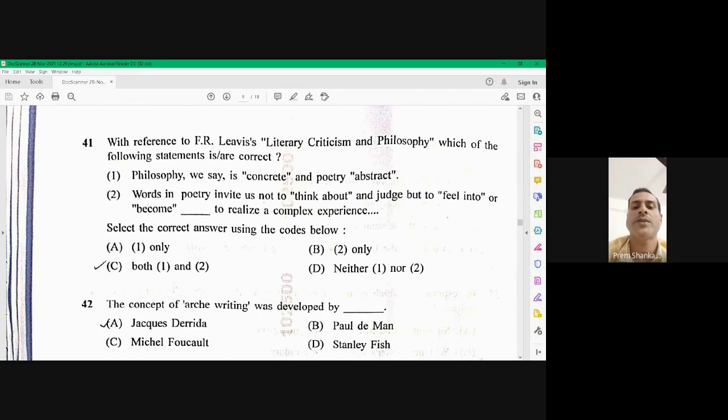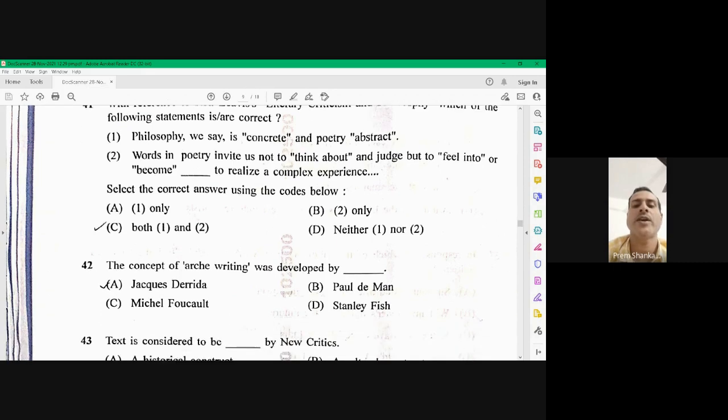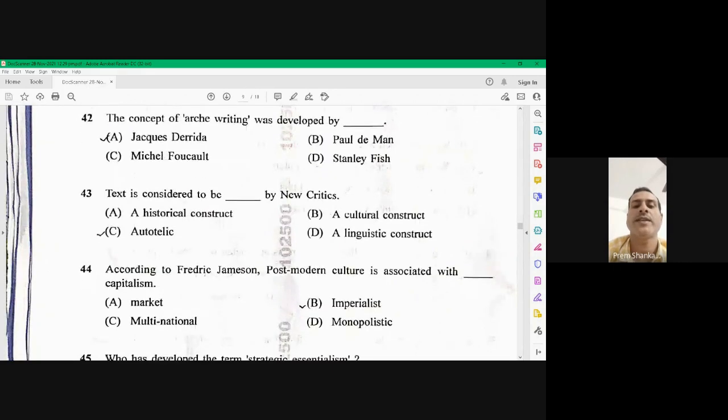Question number 42, the concept arch writing was developed by. Right option is Jack Dorida is the right option. Question number 43, text is considered to be autotelic by neocritics. Autotelic is the right answer. 43 is C.